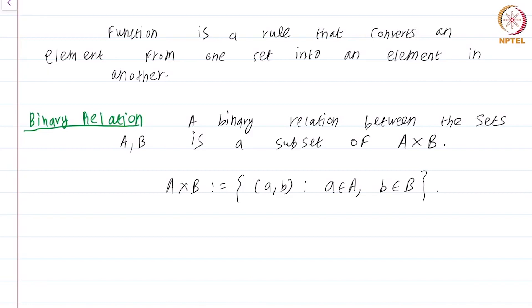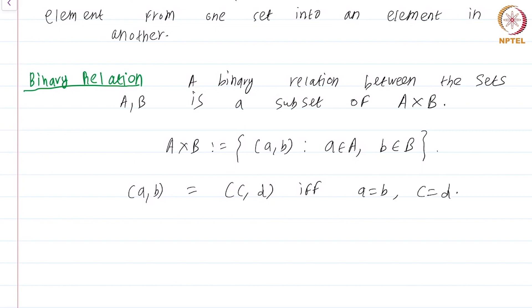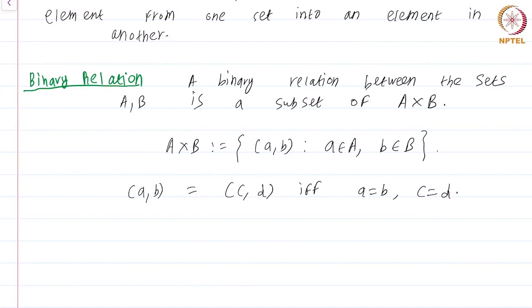The question arises: what is an ordered pair? You will have to wait till the module on axiomatic set theory to see the full definition, but the ordered pair is characterized by the property that (a, b) equals (c, d) if and only if a equals c and b equals d. A set has no ordering within it — no notion of first or second element — whereas ordered pairs have the notion of a first coordinate and a second coordinate.